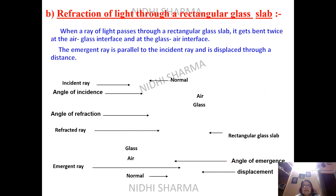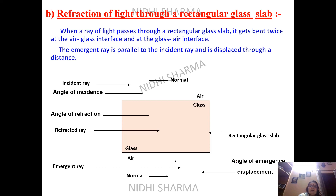Another example related to refraction of light is a rectangular glass slab. Glass slab is made up of pure glass. When light comes from air, enters glass, and then comes back to air, it has to bend twice — at the air-glass interface and at the glass-air interface. That means we will have double refraction.